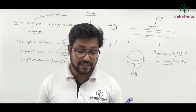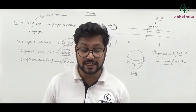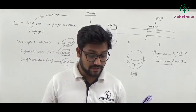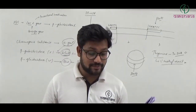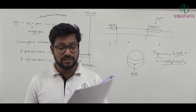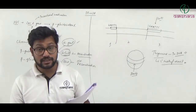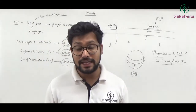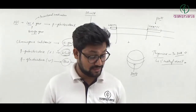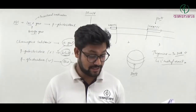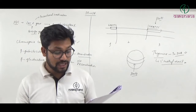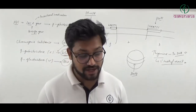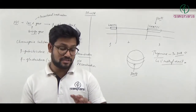Question number thirty-three: Select the incorrect statement with respect to the human genome. The first statement says the largest gene is autosomal with 2.4 million base pairs — this is wrong. The largest gene is dystrophin, which is X-linked, not autosomal. The second statement — human genome contains 3164.7 million nucleotide bases — is correct. Other statements are also correct. So question number thirty-three's first option is the right answer (the incorrect statement).